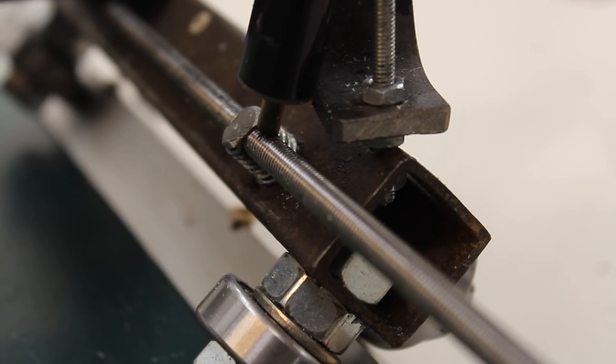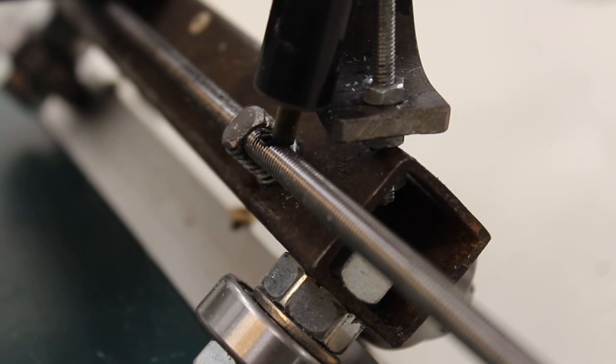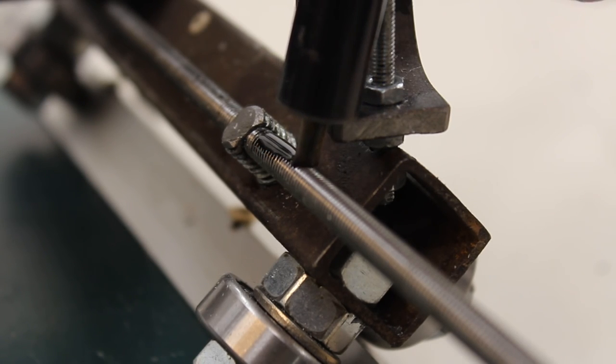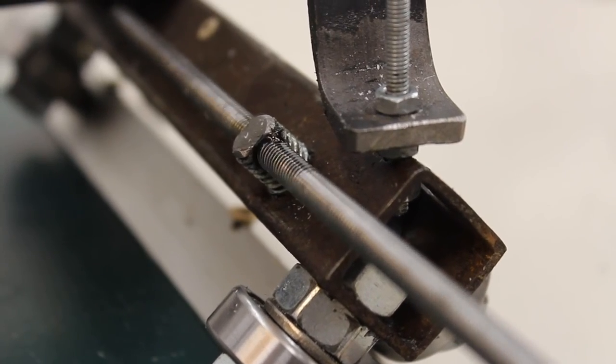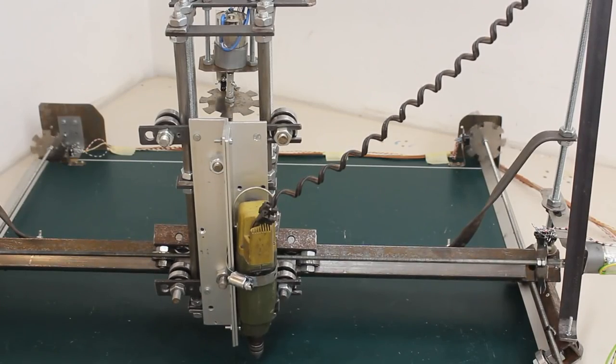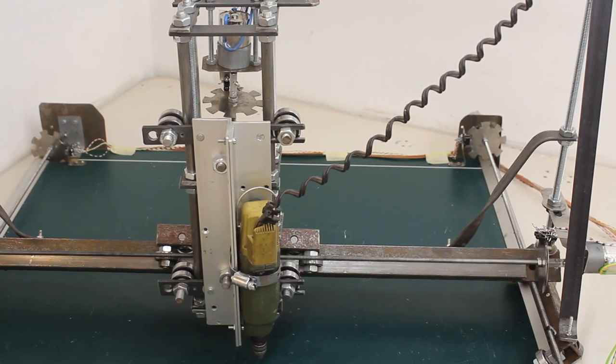To reduce friction, put some lubricant on the threaded bar. This black fluid is used motor oil, something I have always in stock. In total, you need 4 drives.